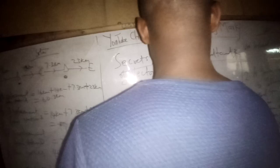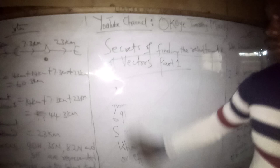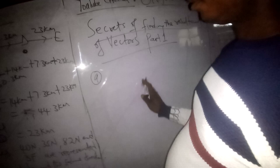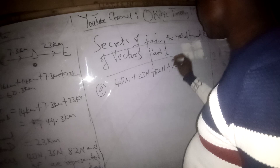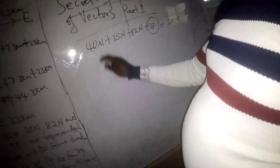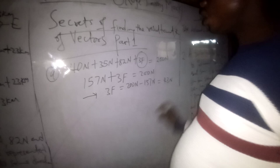For part A: 40 N + 35 N + 32 N + 3F = 200 N. Adding the known values: 40 + 35 + 32 = 107... giving 157 N + 3F = 200 N. Therefore 3F = 200 − 157 = 43 N. So the 4th force is 43 N.